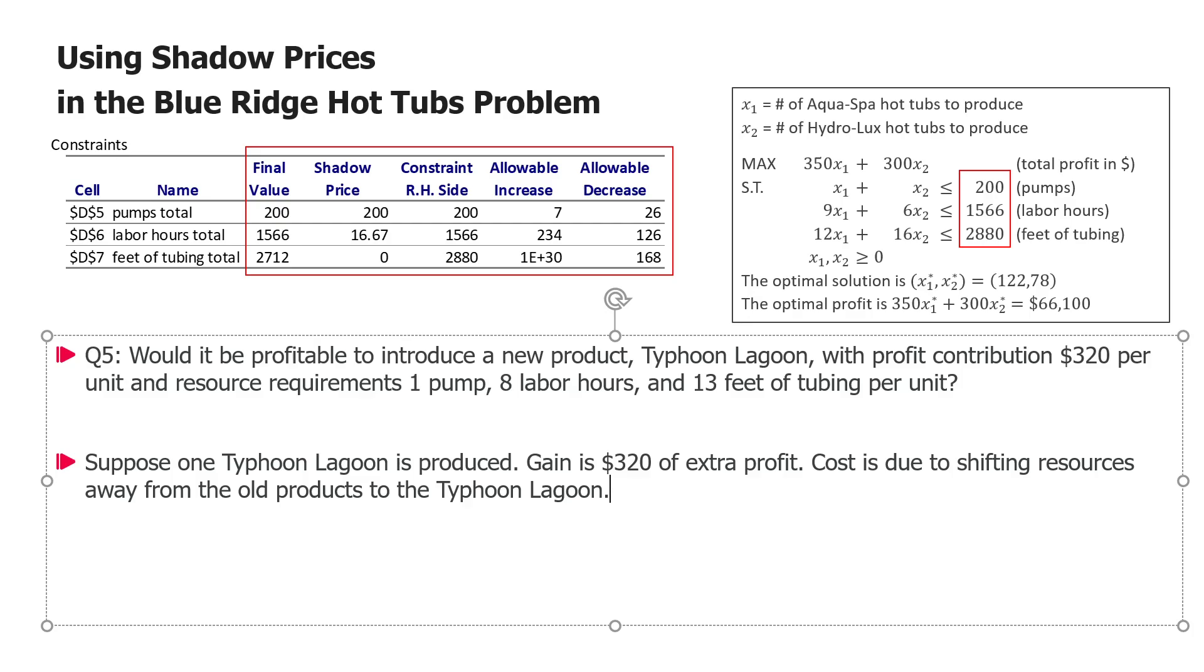So what I'm trying to say is that we can actually calculate the net gain from a Typhoon Lagoon. The net gain from one unit of the new product will be equal to the unit profit 320 minus cost of resources. And this cost of resources will be one pump times shadow price one plus eight labor hours times shadow price number two and plus 13 feet of tubing times shadow price three. So we can actually calculate this 320 minus and then we say one times 200 plus eight times 16.67 plus 13 times zero.